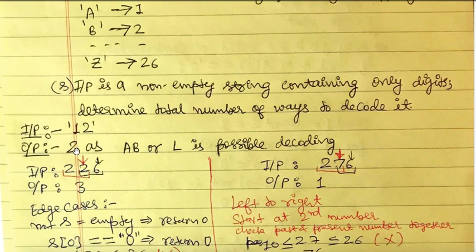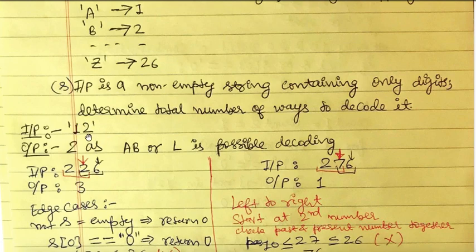In the first decoding of '12', we take 1 and 2 separately to get A and B. In the second decoding, we decode 12 as one number together to get L. So there are two possible decodings and the output is 2.